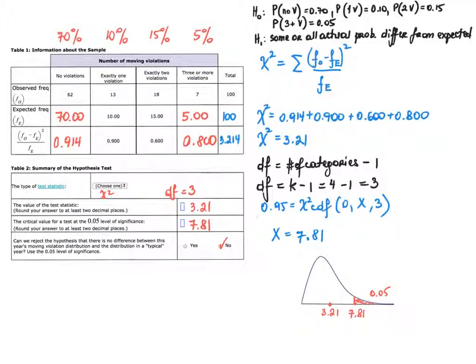Now we continue to Table 2, which summarizes the hypothesis testing process. The null hypothesis states the expected probabilities of the four categories: probability of no violation is 70%, probability of one violation is 10%, and so on. The alternative hypothesis states that some or all actual probabilities differ from the expected ones — in other words, what happens in a typical year is not true anymore this year.